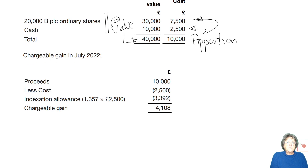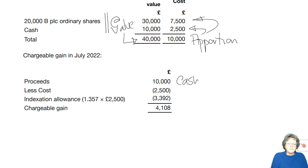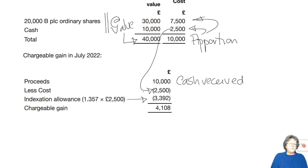It's almost exactly the same as it is for individuals. So if you have done that chapter, this is a really good revision chapter. The proceeds is the cash received, there's a cost, and there is the indexation allowance for that.